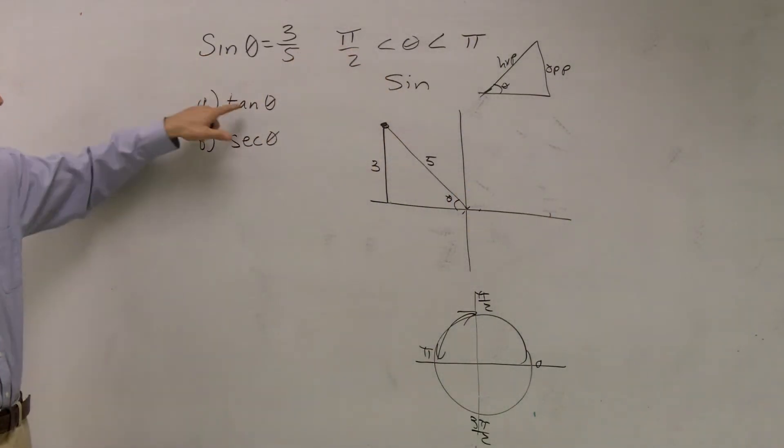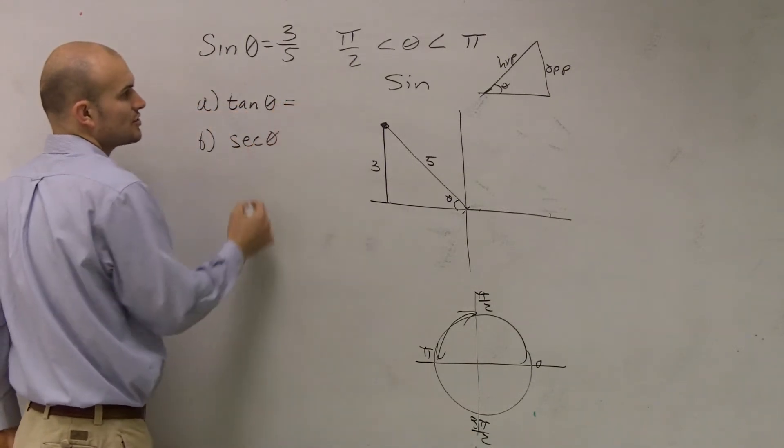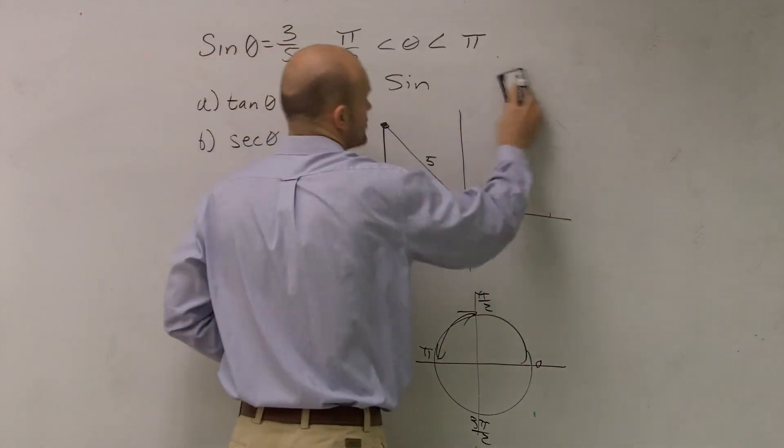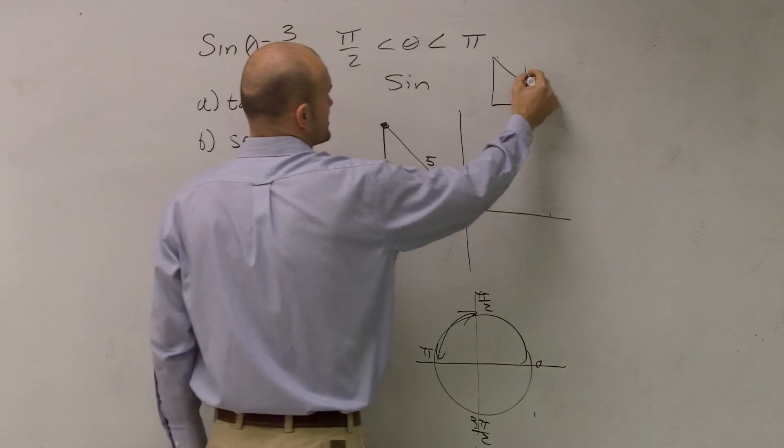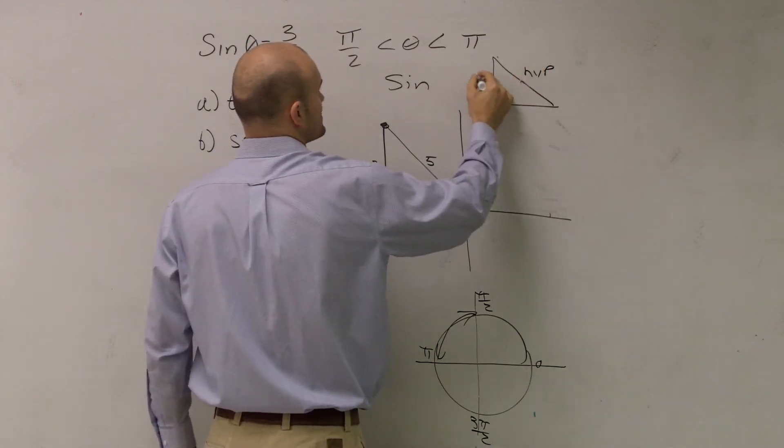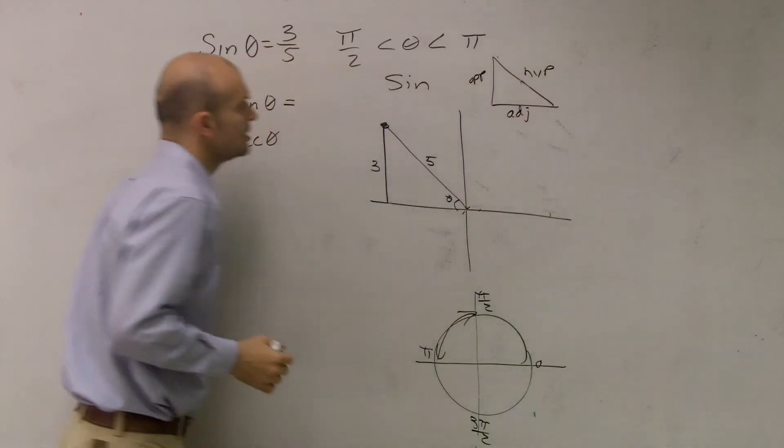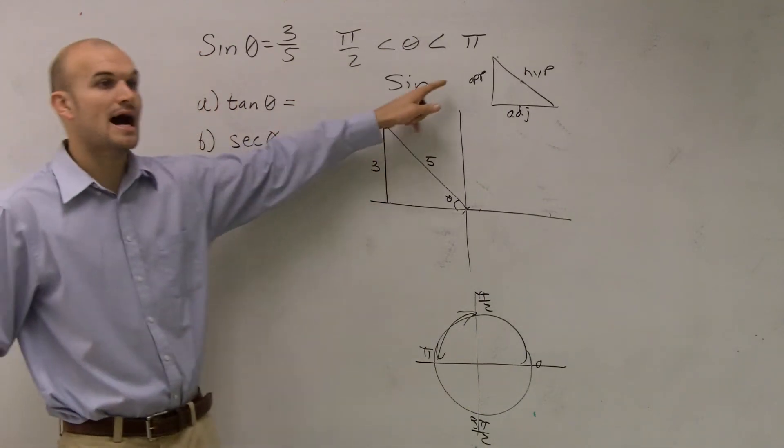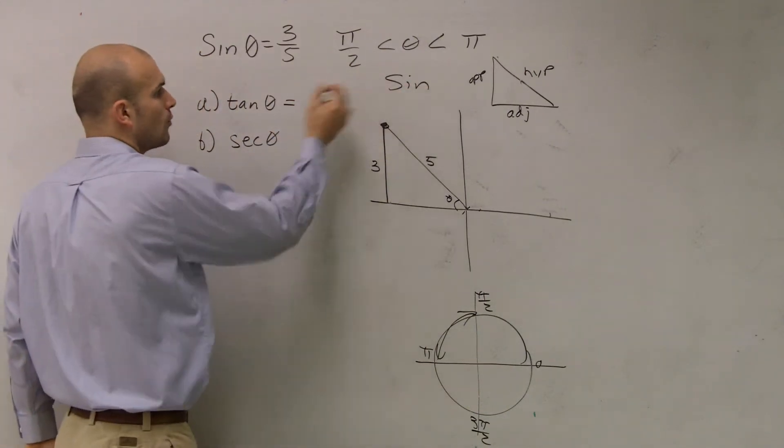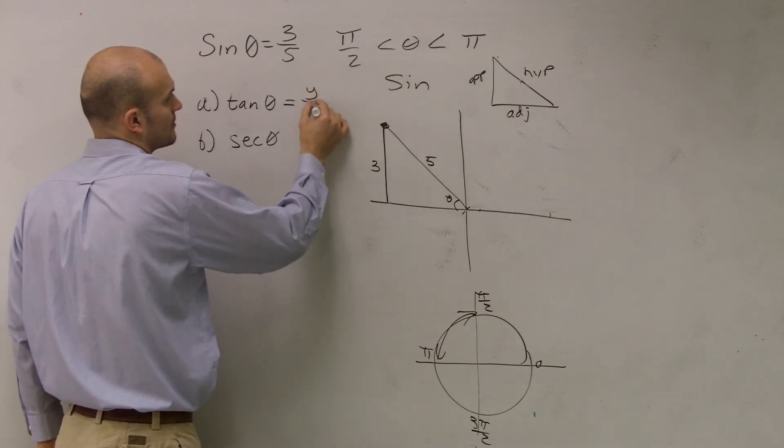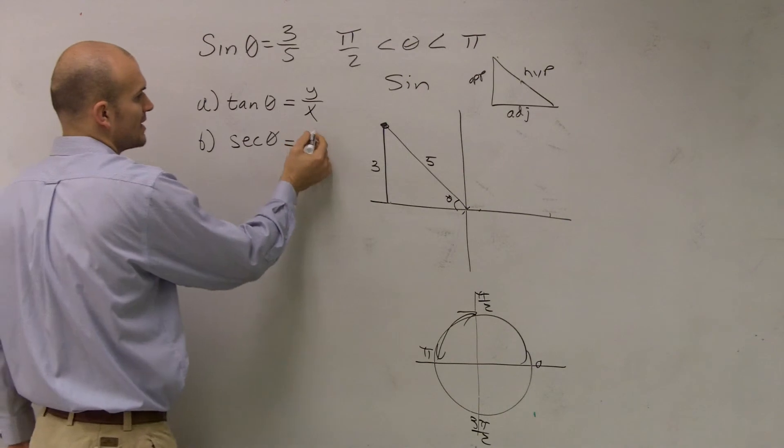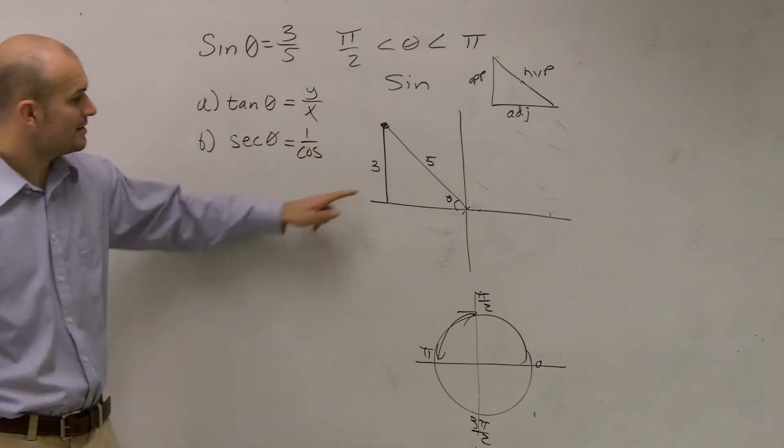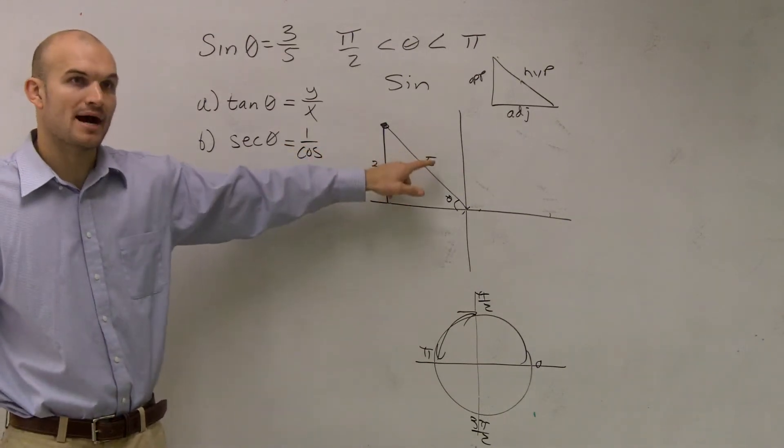So I'm going to just erase this. So what they're asking for is they want us to find the tangent. Well, what is your tangent? Remember, tangent is going to be your, so let's rewrite what our triangle looks like. So our triangle looks like this, where this is your hypotenuse, your opposite, and this is our adjacent side. So remember, tangent is going to be opposite over adjacent, or our y over our x. And our secant is, remember, 1 over cosine, where cosine is going to be adjacent over hypotenuse.